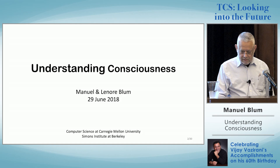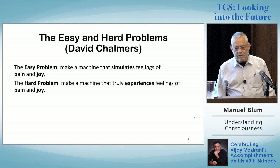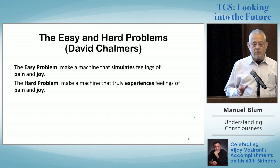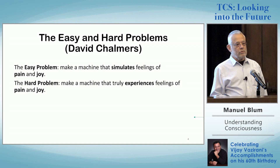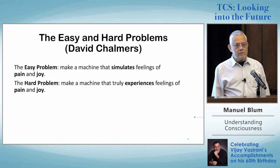To explain the problem, let me talk about the easy and the hard problems. These are defined by David Chalmers. Easy is to make a machine that can simulate feelings of pain and joy, and hard is to make a machine that truly experiences feelings of pain and joy. And there is a difference.